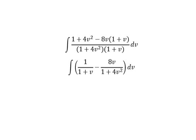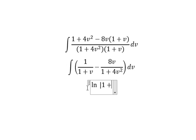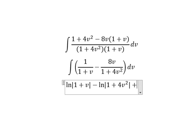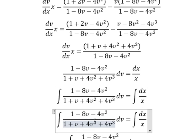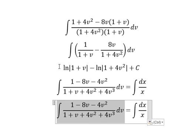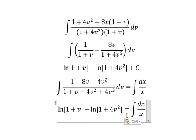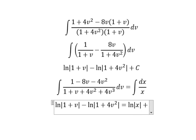And now we have the final answer. The integration of this one, we have like this. The next one, that is about ln of the absolute value of 1 plus 4v squared. And I will put about c. Now we need to go back. So the integration of this one, that is this one. And this one, we have ln of the absolute value of x. And I will put about c.